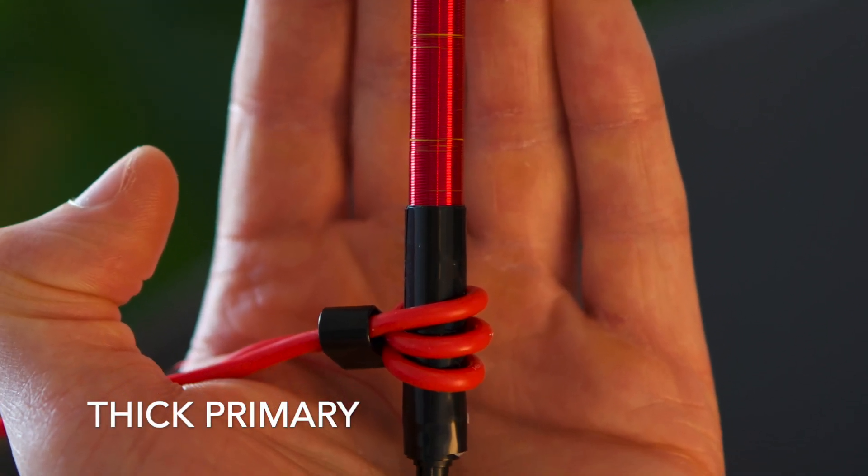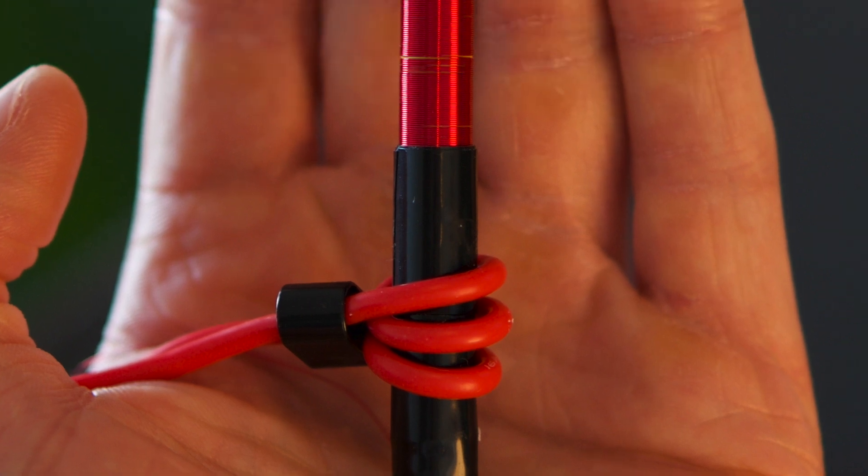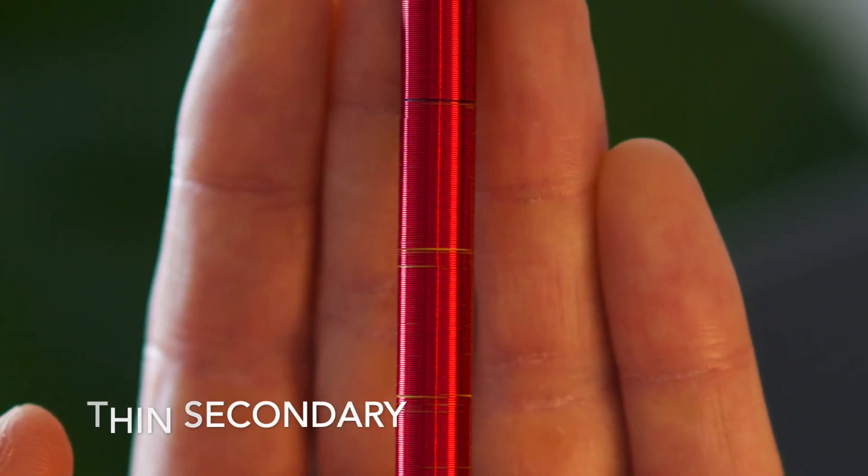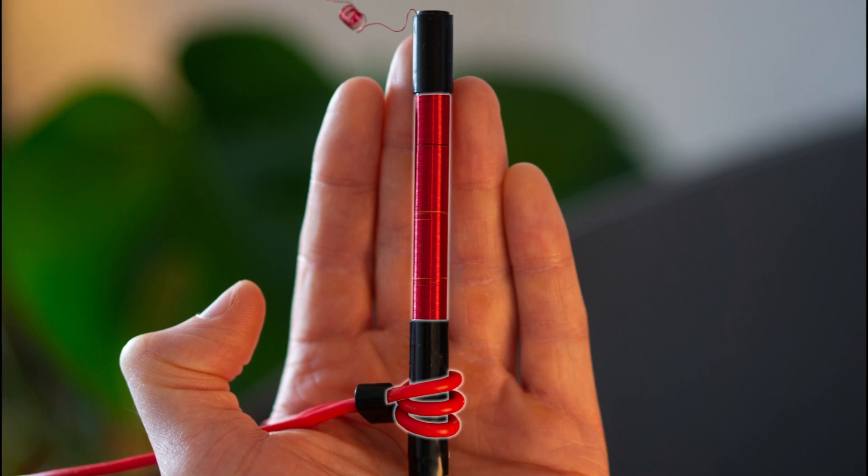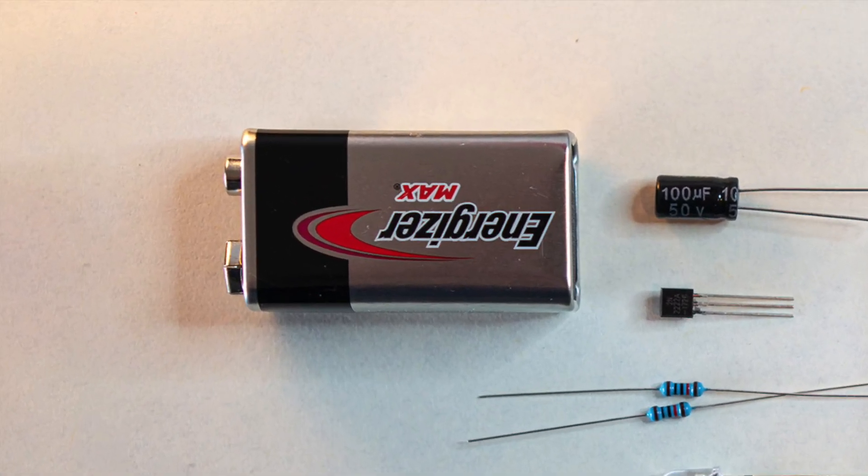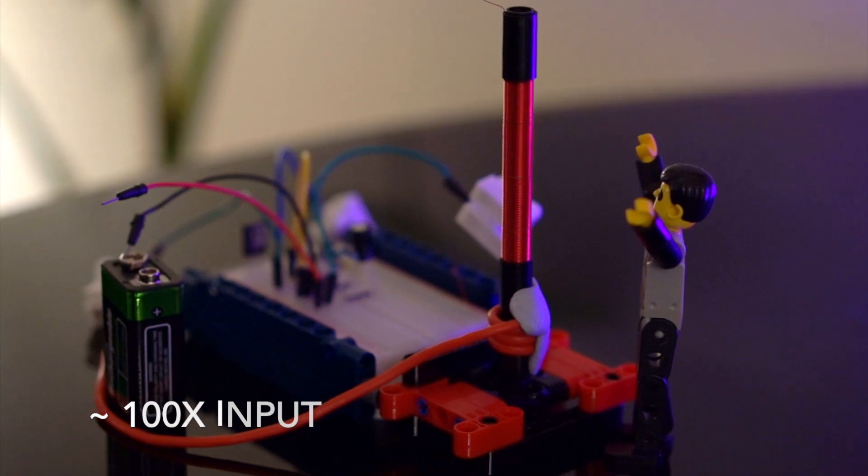When the primary coil, which has around two to three loops, dumps its energy into the secondary coil several hundred thousand times per second, it's boosted by that ratio. So our nine volt battery input is boosted by around a hundred times.